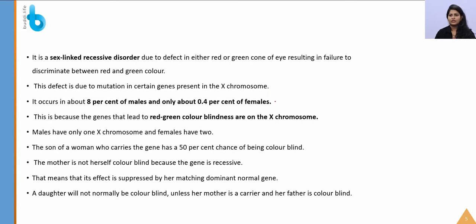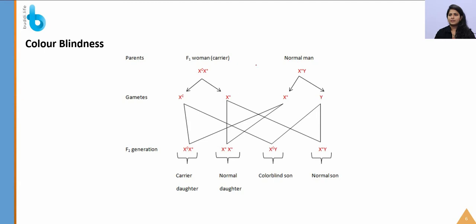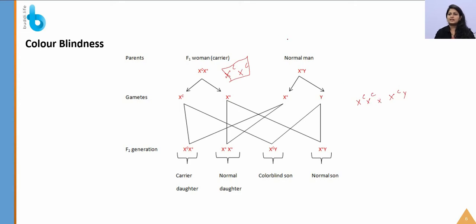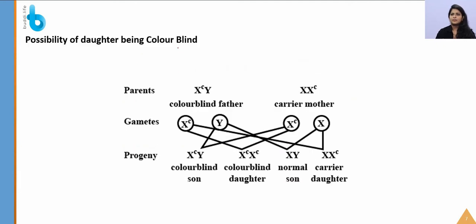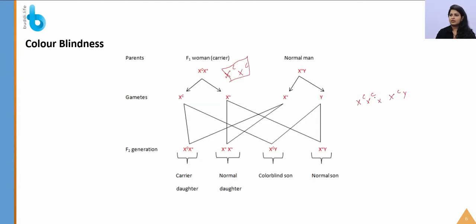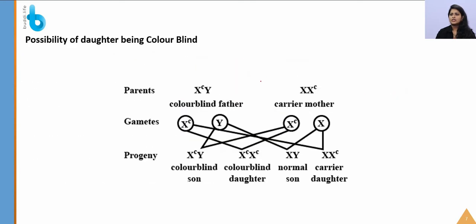In the cross for color blindness, when the woman is a carrier and the man is normal, females will not be affected unless they have both defective X chromosomes. A female becomes color blind only when the mother is a carrier and the father is color blind. In that cross, the outcomes are: color blind son, color blind daughter, normal son, and carrier daughter.